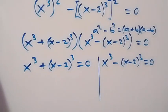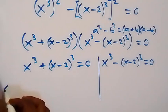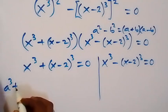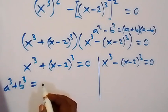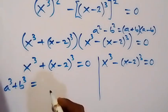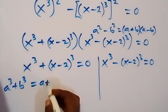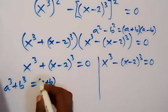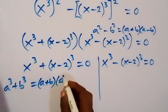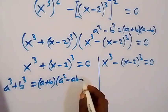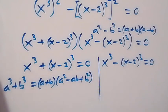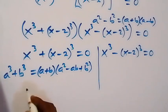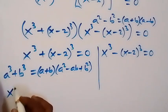For the first case, this follows the sum of two cubes: a cubed plus b cubed, which we can write as (a plus b) times (a squared minus ab plus b squared).